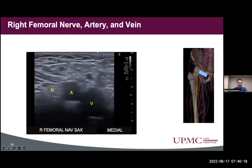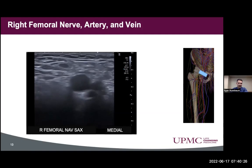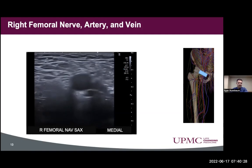Next, we looked at the femoral nerve, artery, and vein. We used a little bit of compression, which can help differentiate the artery from the vein and can also help better visualize the femoral nerve. All of these structures appeared normal on review.